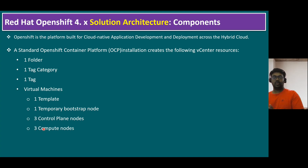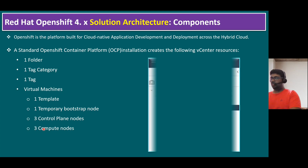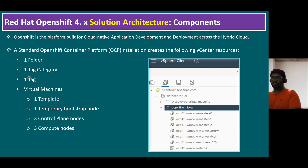The actual step-by-step OpenShift deployment process will be shown in the next session with practical examples. I will explain the pre-implementation steps first — as seen in our solution architecture, we need to do pre-requirements like DNS configuration and DHCP configuration. In later short-byte sessions, I will explain the pre-implementation steps, followed by the implementation process, and finally post-implementation steps. So to summarize: folder, tag, tag category, virtual machines, template, and the temporary bootstrap node — which has already been removed — along with three control plane nodes and three compute nodes.